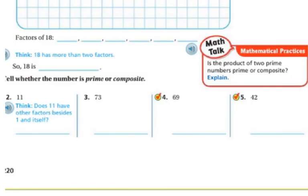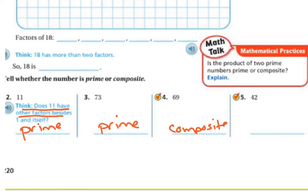So on these next ones, you want to tell whether it is prime or composite. So you have to think to yourself, does 11 have other factors besides 1 and itself? If the answer is no, then it's prime. Because only 1 and 11 goes into it. And 73, only 1 and 73 goes into it. So it is prime. 69 has other numbers. 3 can go into it and some other numbers. So this one is composite. I think about the divisibility rules. Well, this ends in a 2, so we know 2 can go into it, right? So this one is composite.